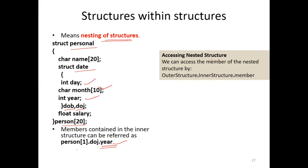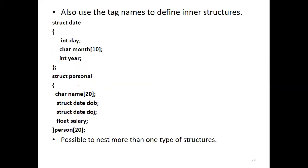The next structure is the outer structure, and there is also the inner structure. We can also use the tag names. The structure is defined here, as you can see. We can define the person in the outer structure and define the date in the date structure. The data in the structure means using the tag name.